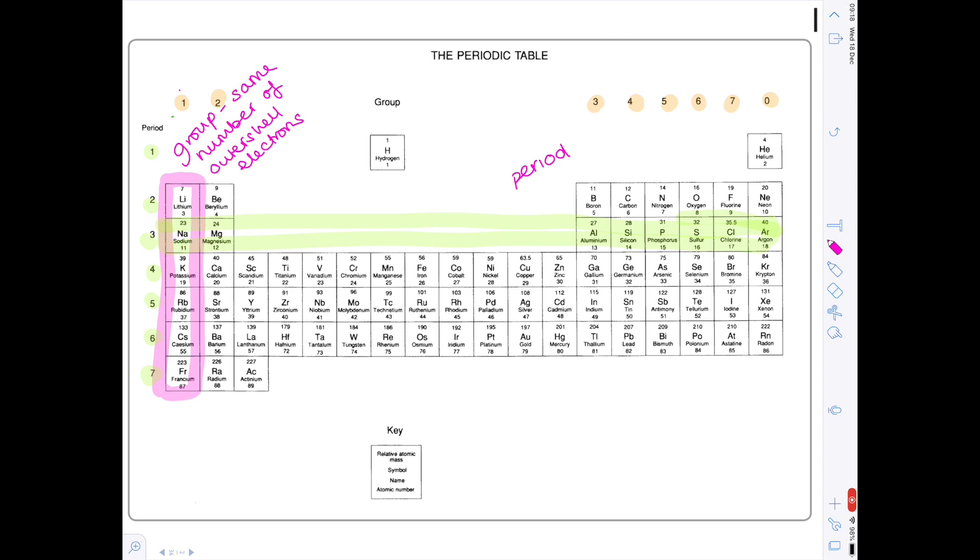Well let's work it out. Let's compare sodium's electronic configuration, 281. That's because it has 11 electrons. With aluminium's electronic configuration which is 283. And then with sulfur's electronic configuration which is 286. What do all these elements have in common? Well notice that they all have three shells of electrons. So what is true for all elements in the same period? They have the same number of shells of electrons.